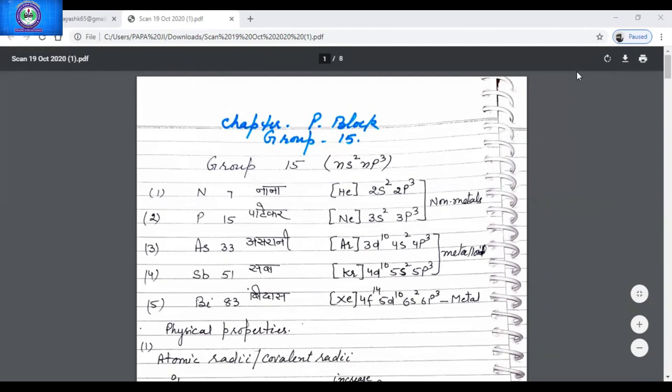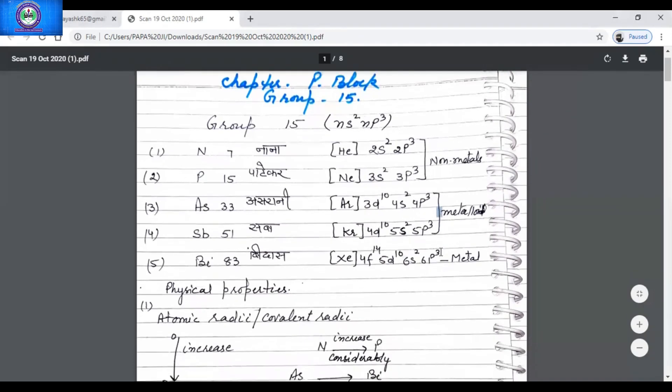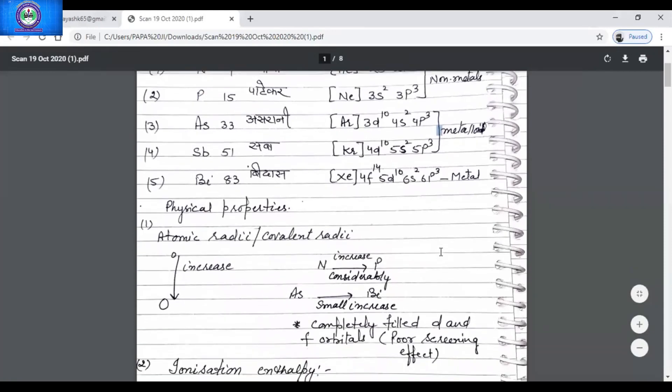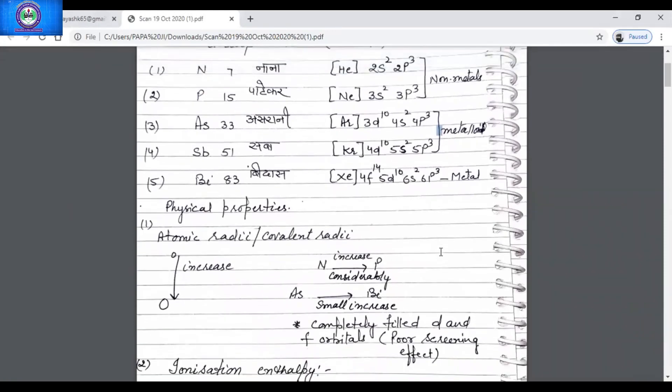Now we'll be studying their physical properties. The first physical property here is atomic radii. As you know, atomic radii of elements decrease along a period, but in a group as we go down, atomic radii increases.